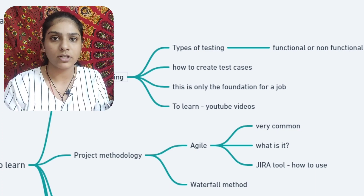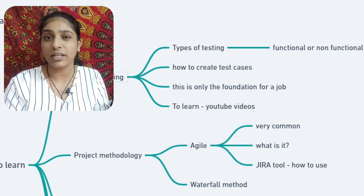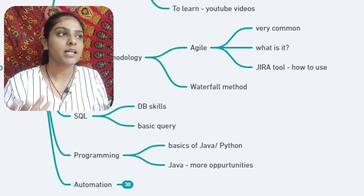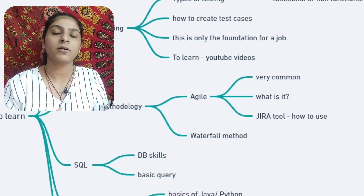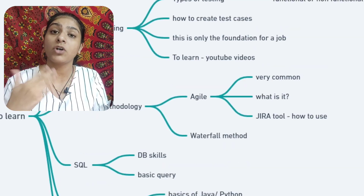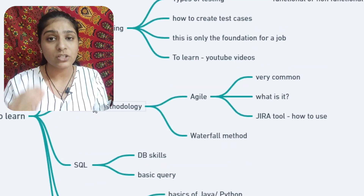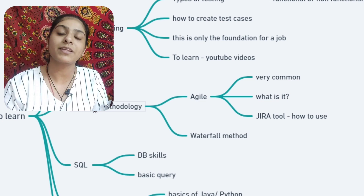The second step is project methodology. There are different types of methodologies — Agile or Waterfall. It is 90% Agile, as the majority of organizations are using Agile methodology.